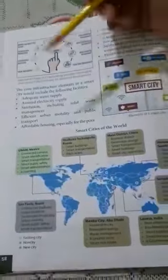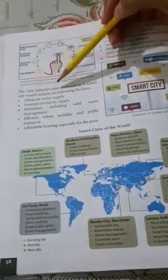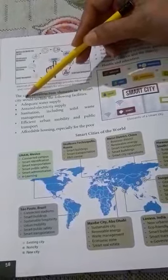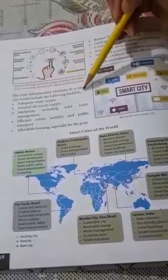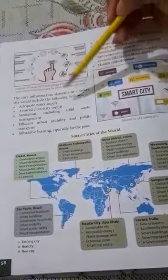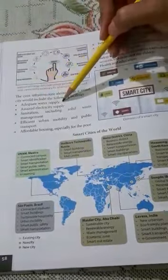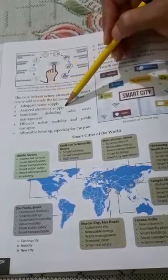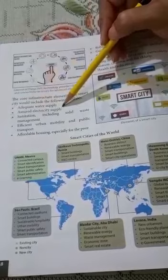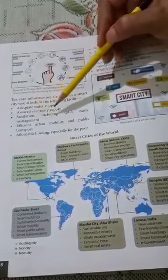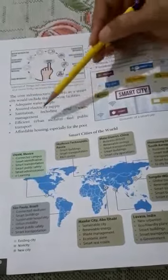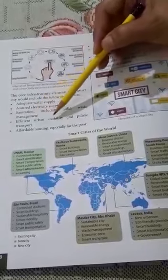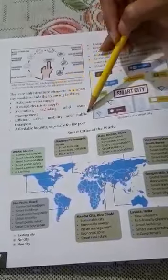Now we will focus on the core infrastructure elements in a smart city, which includes the following facilities: adequate water supply, assured electricity supply, sanitation including solid waste management, and efficient urban mobility and public transport.